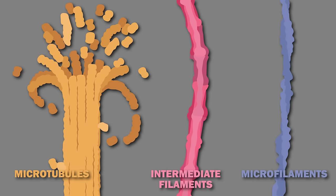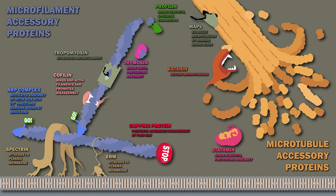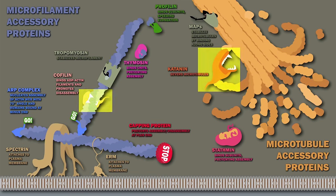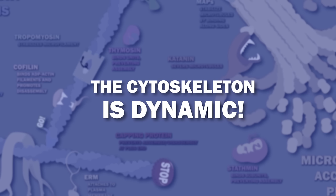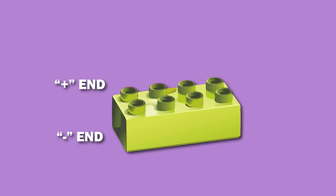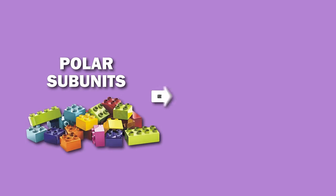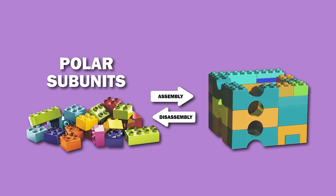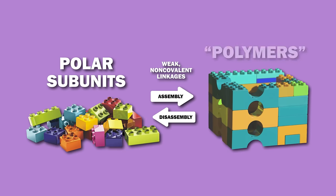The three kinds of cytoskeleton filaments work in concert with countless accessory proteins, which attach the filaments to each other and to other cell components, and direct their assembly, distribution, and disassembly. The cytoskeleton is not a static structure, but rather is dynamic, able to change or persist to suit the cell's needs. This is because the cytoskeletal structures are composed of tiny polar subunits that can rapidly assemble and disassemble, thanks to weak, noncovalent linkages into polymers.